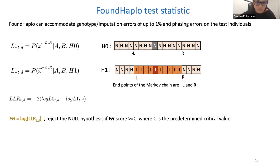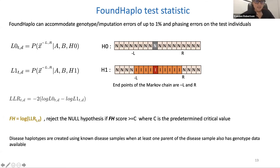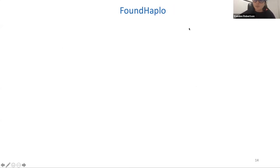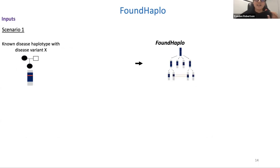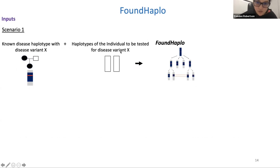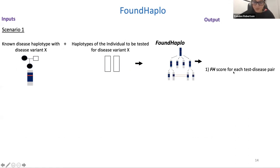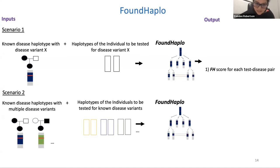Rejecting the null implies the two haplotypes are distantly related, and the test haplotype has inherited the disease variant. Disease haplotypes are created using known disease individuals when at least one parent also has genotype data, to prevent phasing errors. The simplest scenario tests one individual using one disease haplotype; a more complex scenario tests multiple individuals across multiple disease haplotypes and outputs both individual HEFTRES scores and a combined score across all disease haplotypes for a single variant of interest.